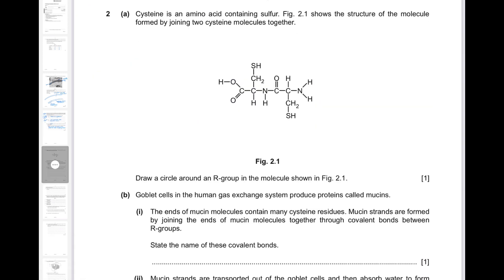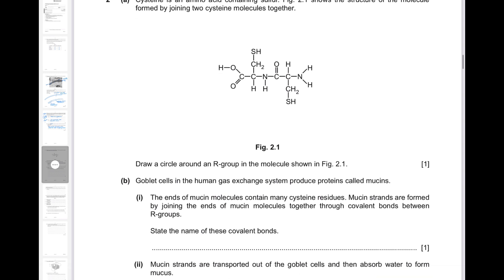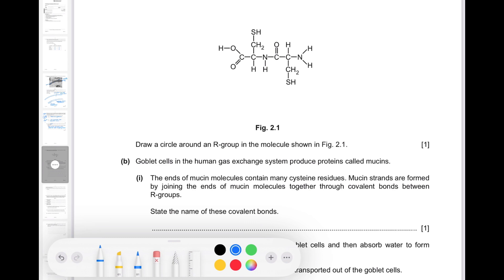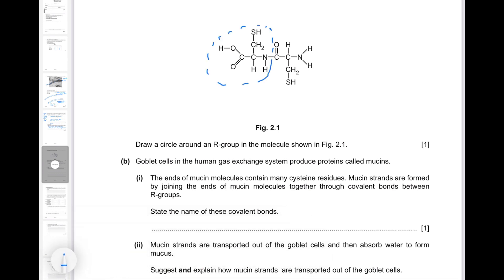Question 2a: Cysteine is an amino acid containing sulfur. Figure 2.1 shows the structure of the molecule formed by joining two cysteine molecules together. Draw a circle around an R group in the molecule. The R group is the atom or group of atoms bonded to the central carbon atom in any amino acid. Here you've got the first amino acid bonded to the second amino acid by a peptide bond. The group of atoms bonded to the central carbon atom is the R group, and similarly this one over here is the R group for the second amino acid.